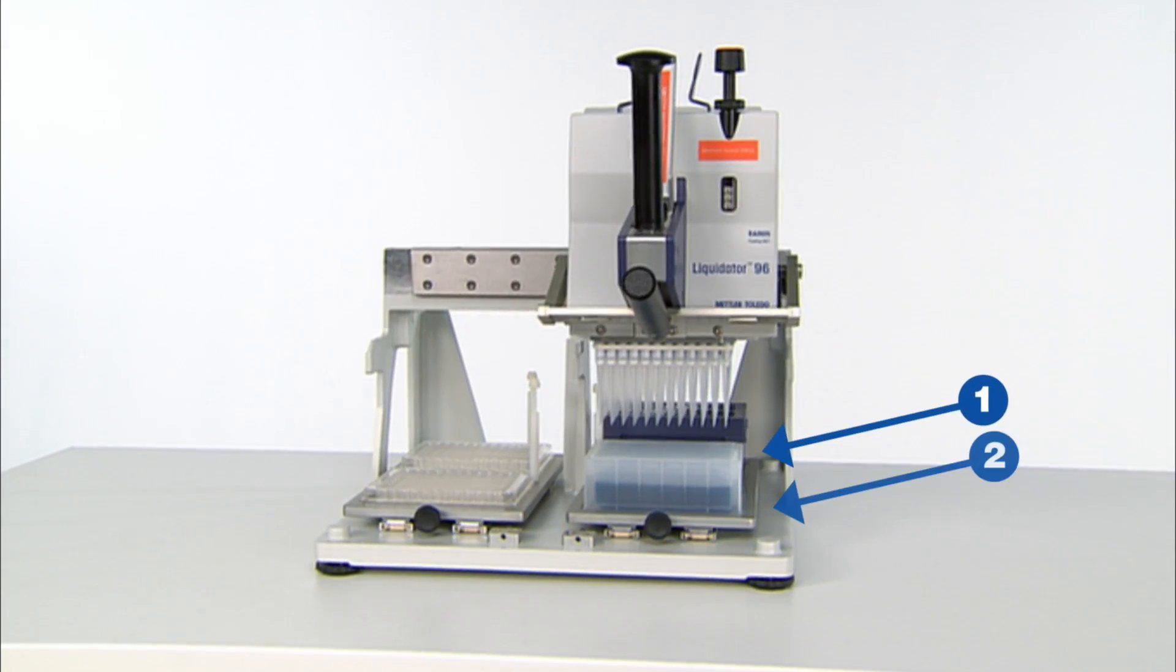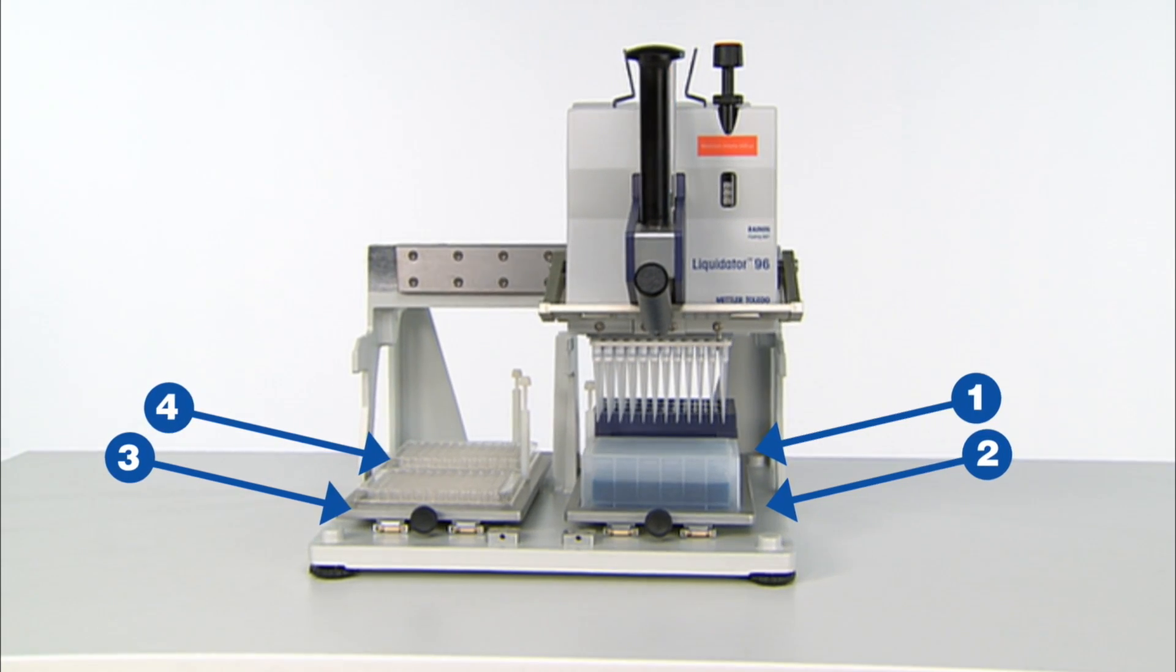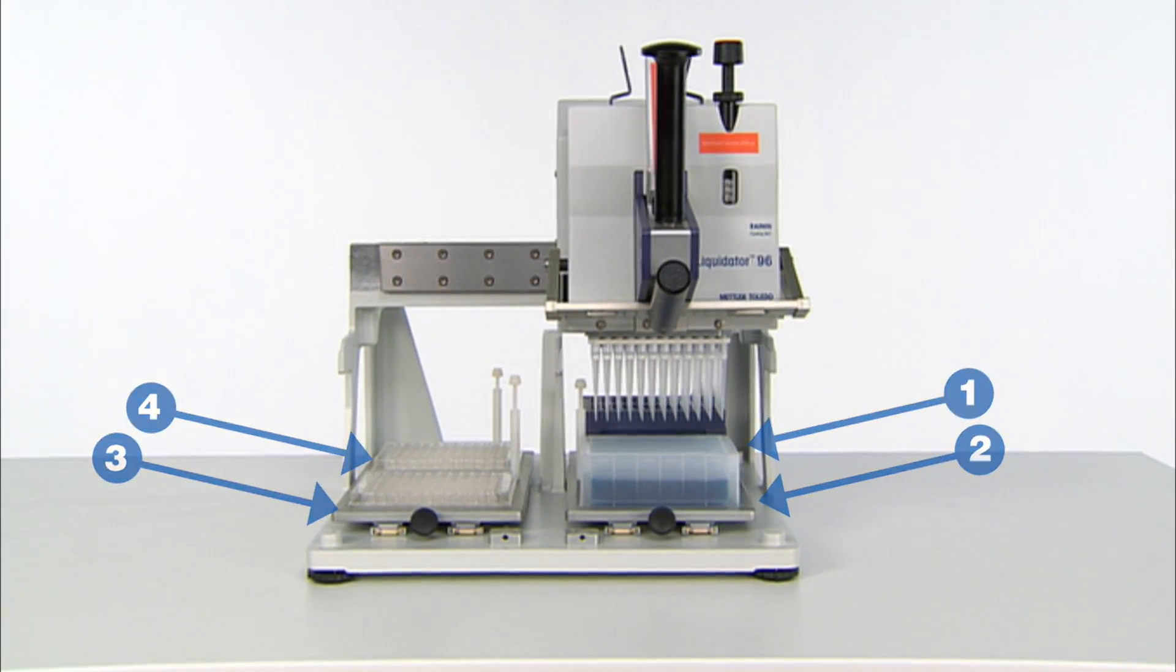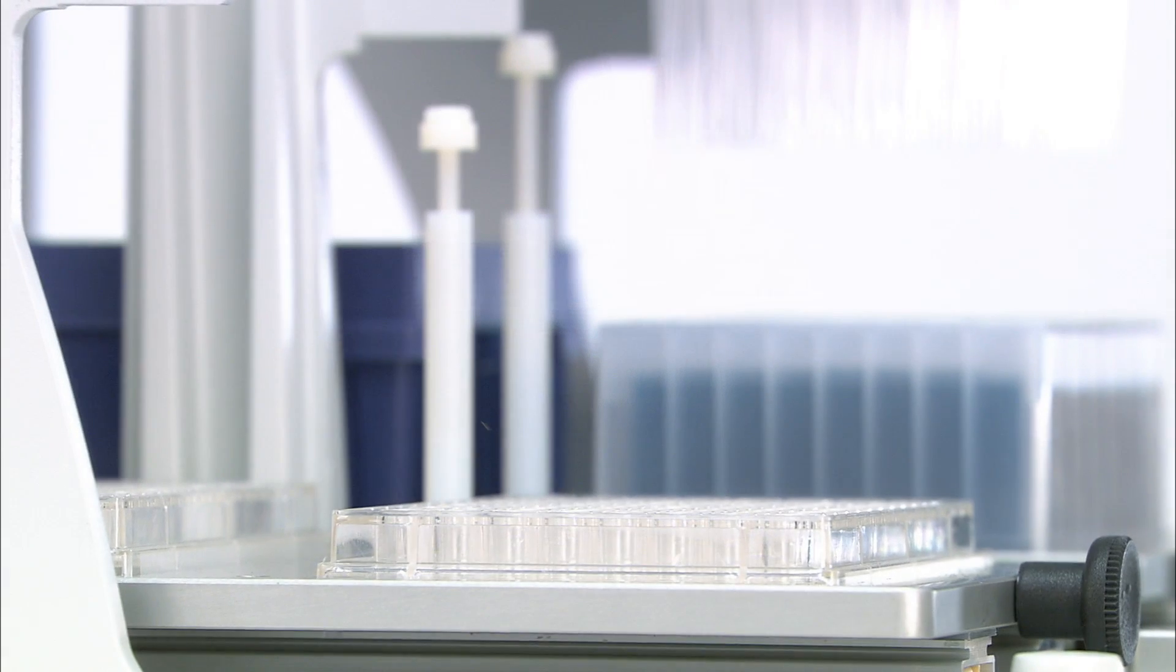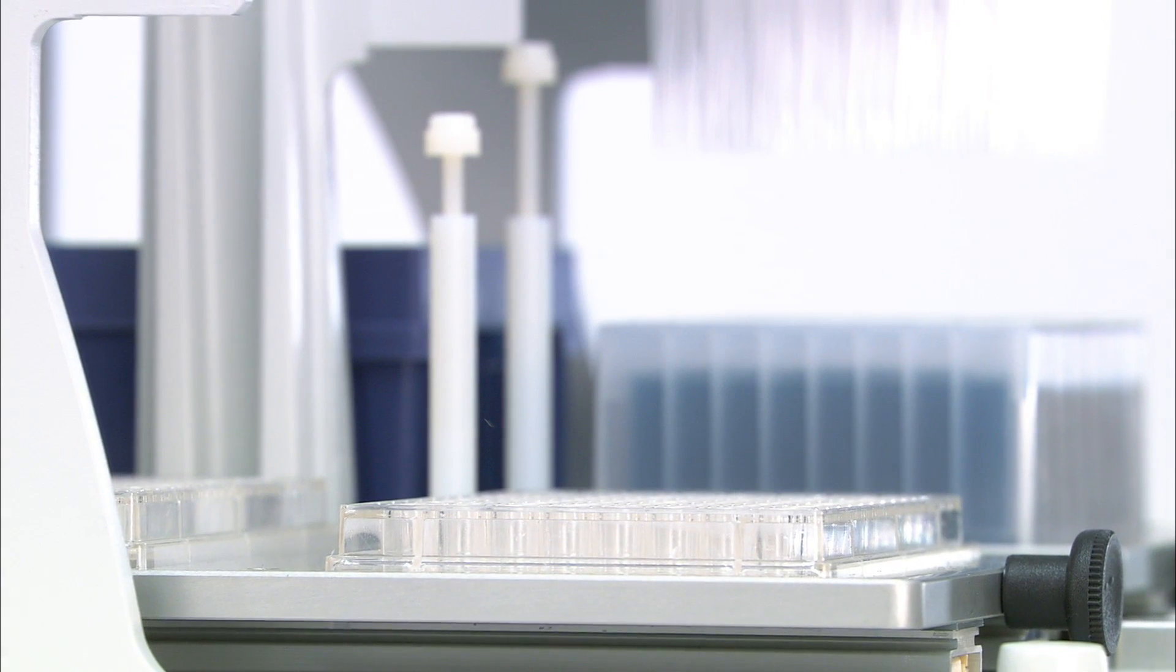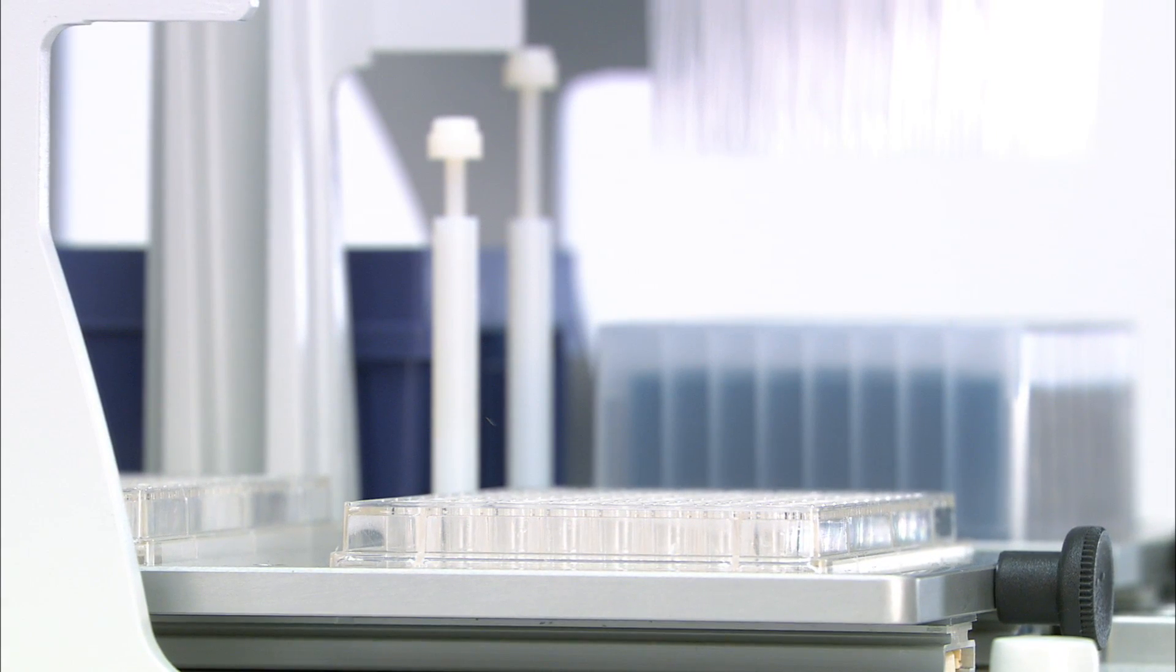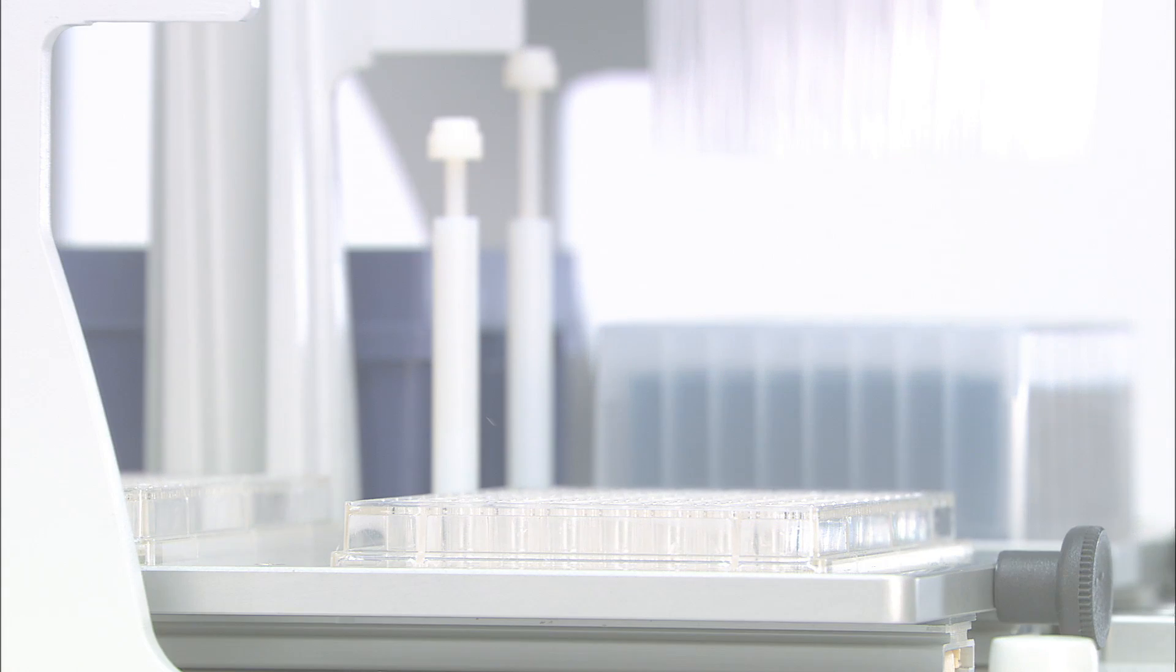The four working platforms on the Liquidator 96 are conveniently configured so that users can pipette with either the right or left hand, depending on their preference. Here we see a Liquidator 96 with two 96 well plates already loaded on the two left platforms.